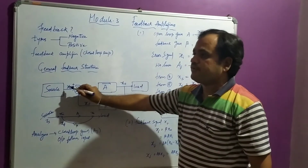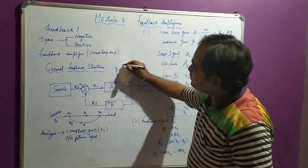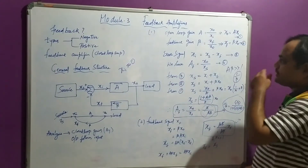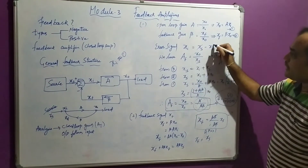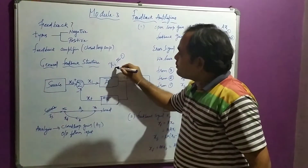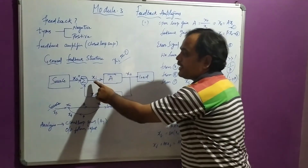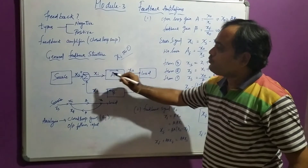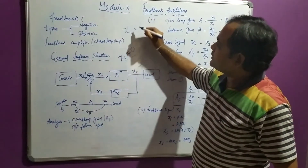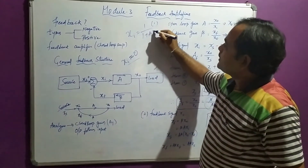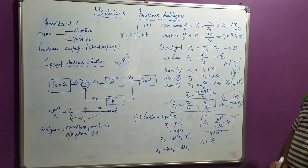Since XF equals XS, the output follows the input. This means XI — the error signal — is approximately equal to zero, because XS minus XF equals zero when both are equal. The feedback loop continues until the error becomes zero, making the output follow the input. We can also find that XI equals 1 divided by (1 plus A·beta) times XS, which confirms XI approaches zero as A·beta becomes large.